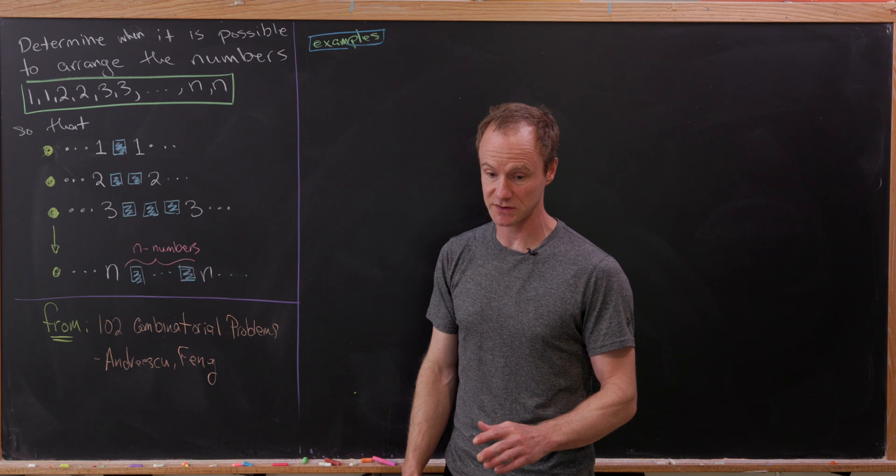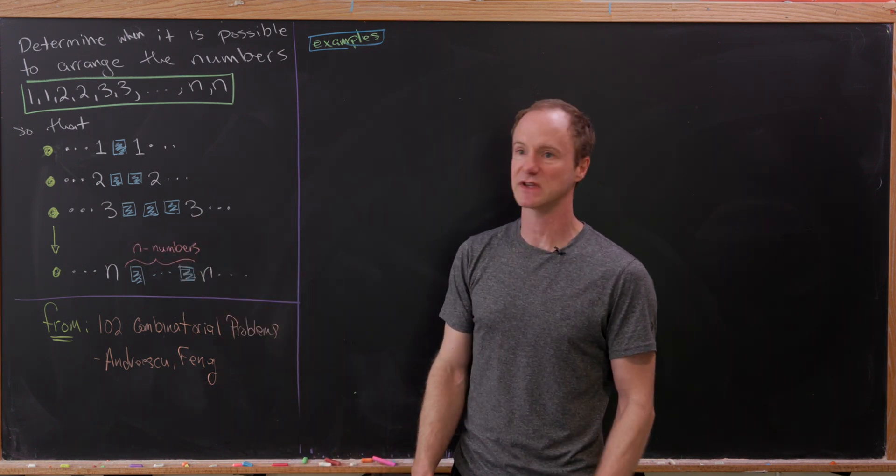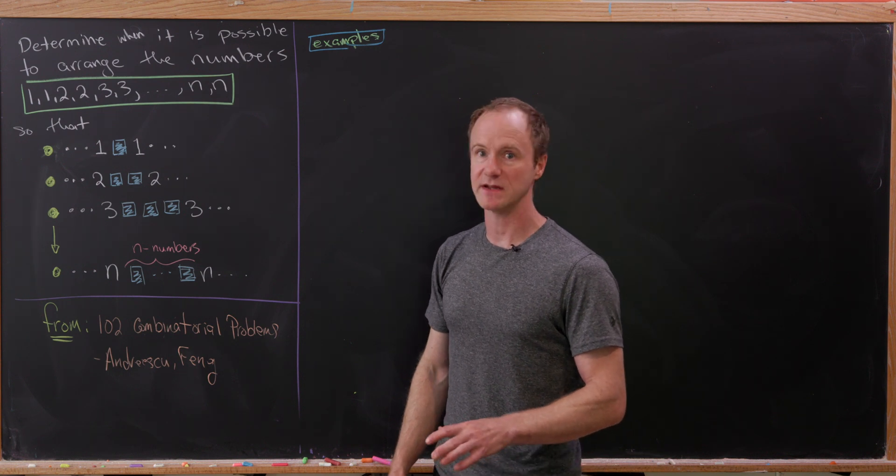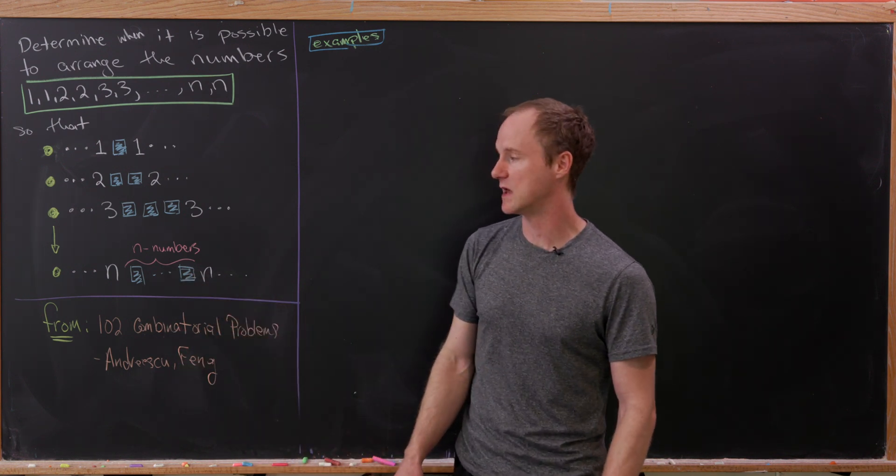Between the appearances of the number 2, there are exactly two numbers. Between the appearances of the number 3, there are three numbers, and so on. That means between the two appearances of the number N, there are N numbers.